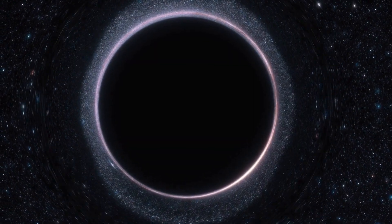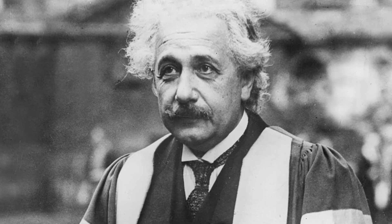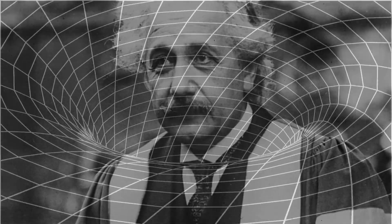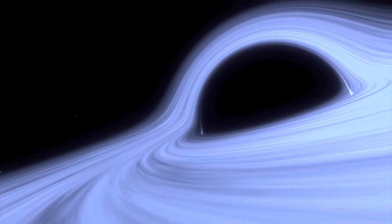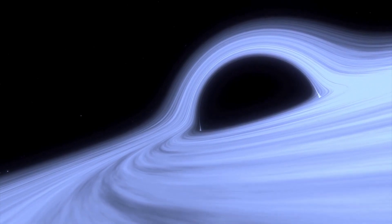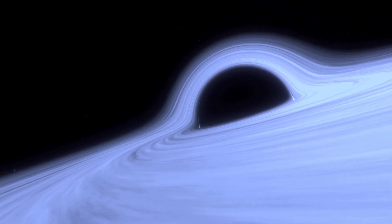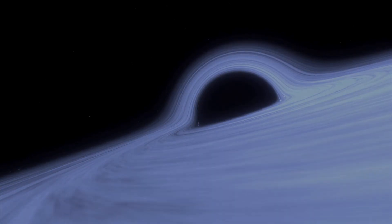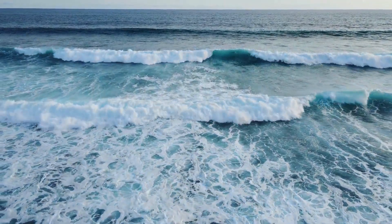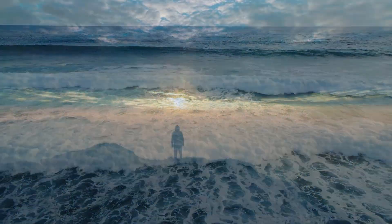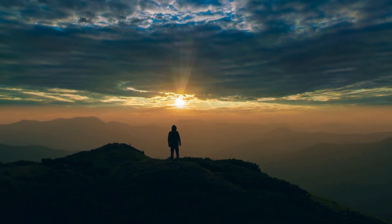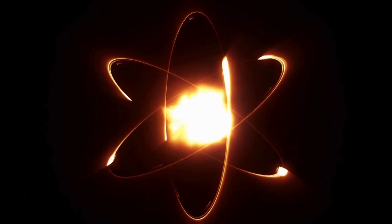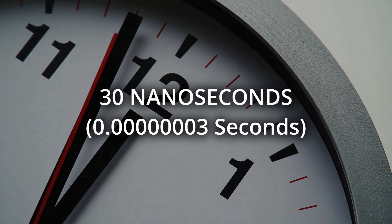Interestingly, time dilation doesn't only happen due to speed — it also occurs near massive objects because of gravity. Einstein demonstrated that gravity bends space-time, causing time to slow down in stronger gravitational fields. For example, near the event horizon of a black hole, time slows so much that it seems to nearly stop for an outside observer. A person falling into a black hole would appear frozen at its edge, never quite crossing it. Even on Earth, gravity affects time — a clock placed at sea level runs slightly slower than one placed at the top of a mountain, where the gravitational pull is weaker. This difference is incredibly small, but has been confirmed in experiments using atomic clocks. The difference in time between these two locations is 30 nanoseconds per day.